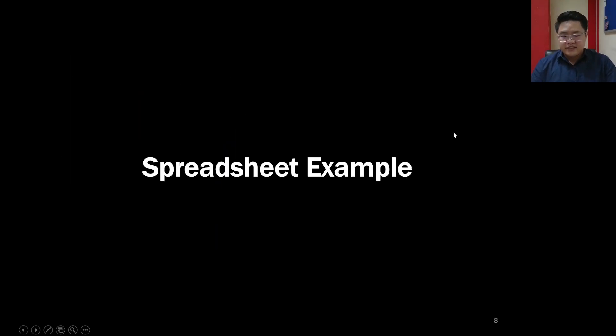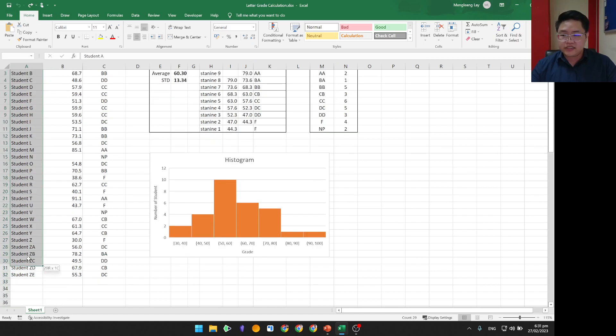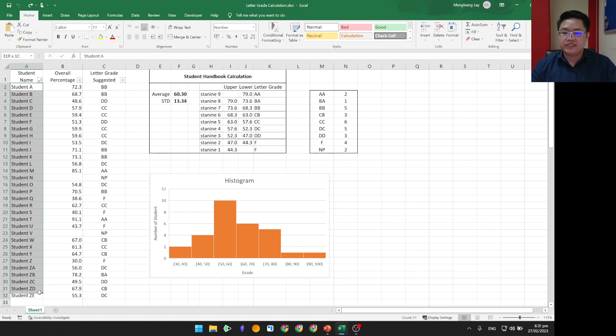Let's look at a spreadsheet that I prepared and this data was from last year. So this is a class with 31 students. So these are their names. Obviously, I would change it. And these are their overall percentages. So student A got 72.3%. And as you can see, there are two blank cells. This represents student N and student V. They did not show up for their final assessments. They either didn't come to the final exam or they didn't submit their final project. So we exclude their percentage from this calculation. In other words, we don't take their percentage into calculation.